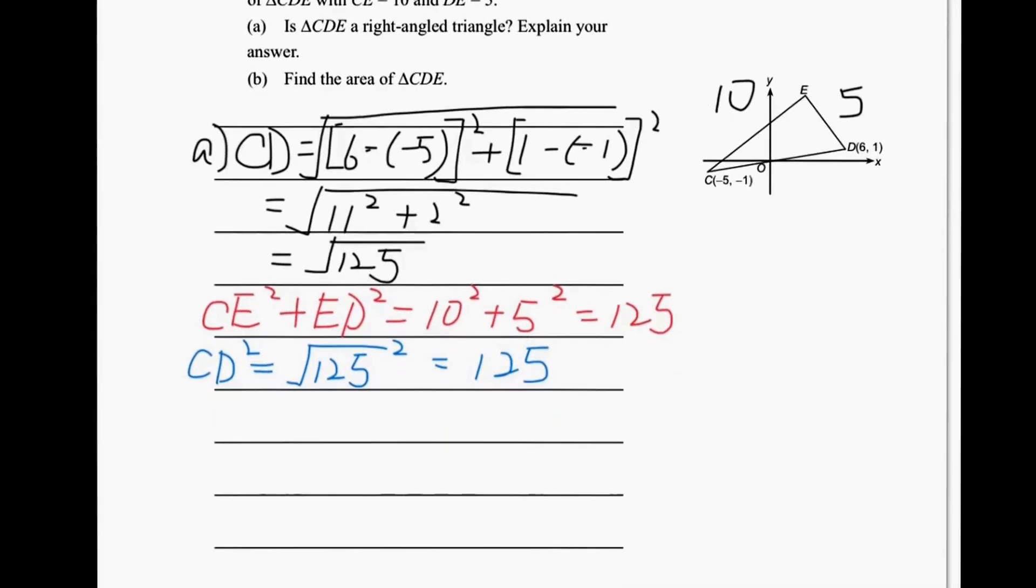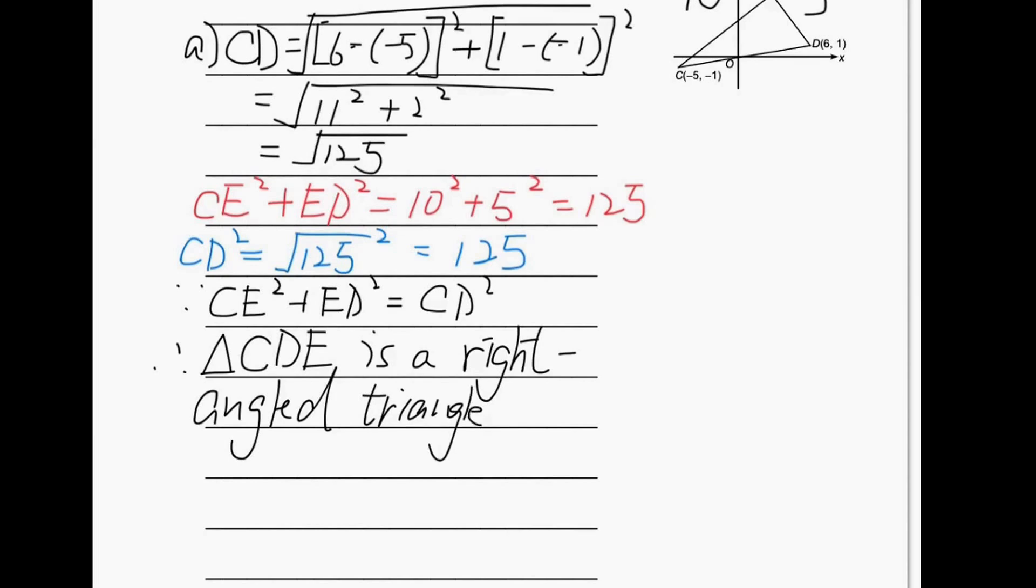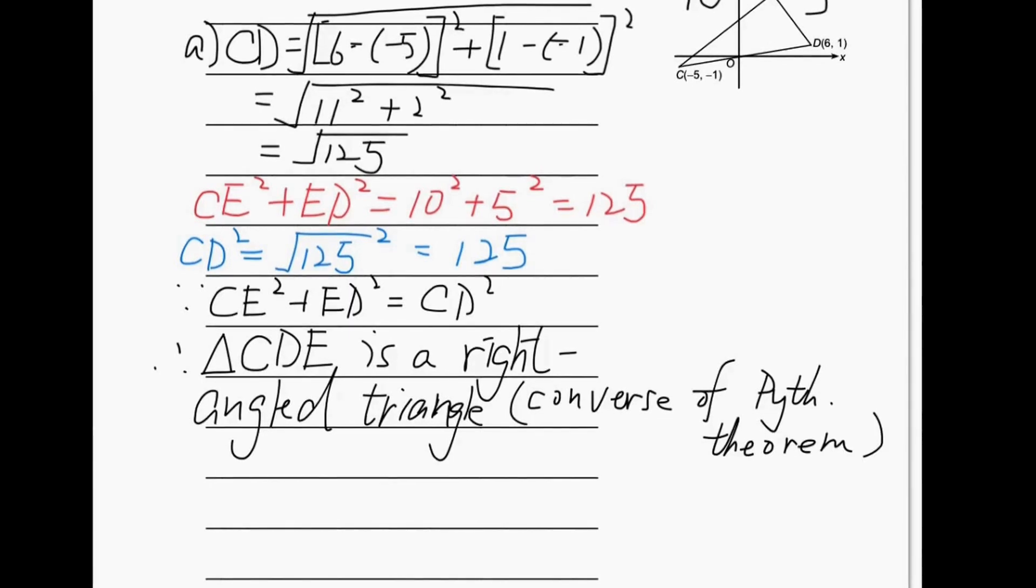Since we found that CE² plus ED² is equal to CD², triangle CDE is a right-angled triangle. And the reason is converse of Pythagoras theorem. This is actually learned in form 2.